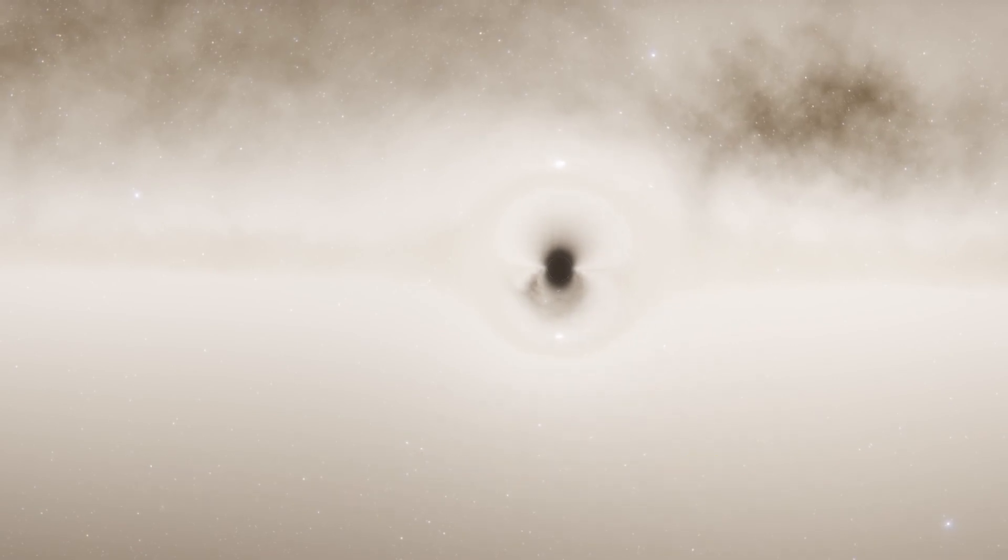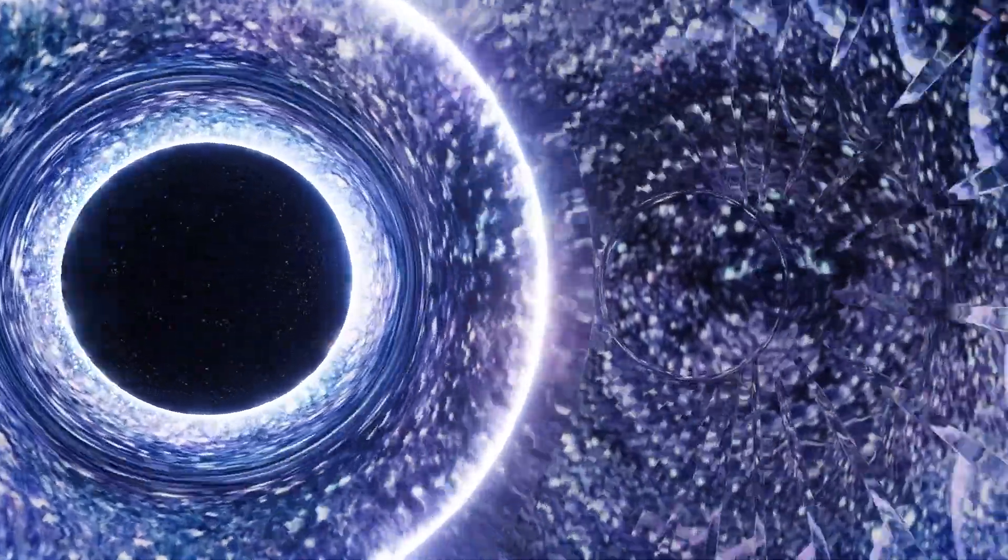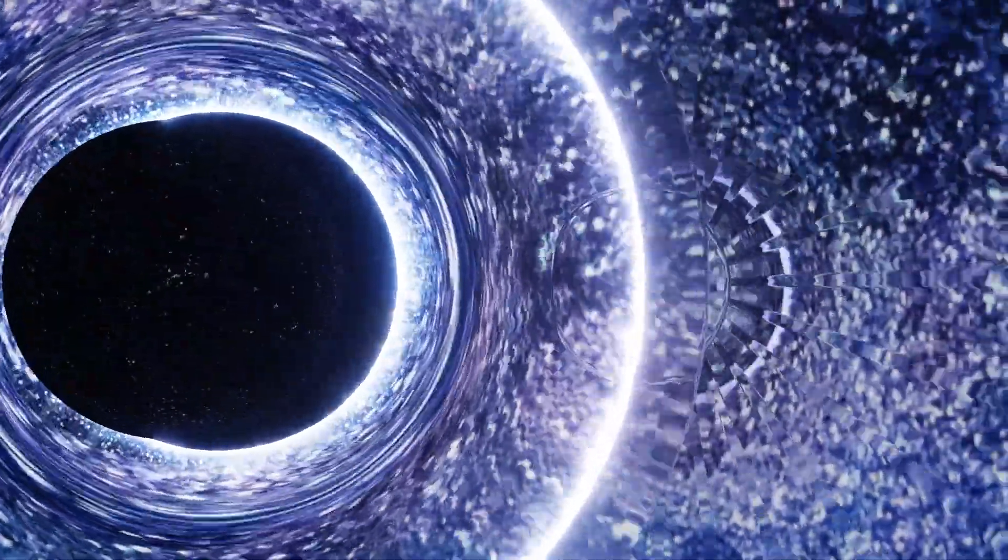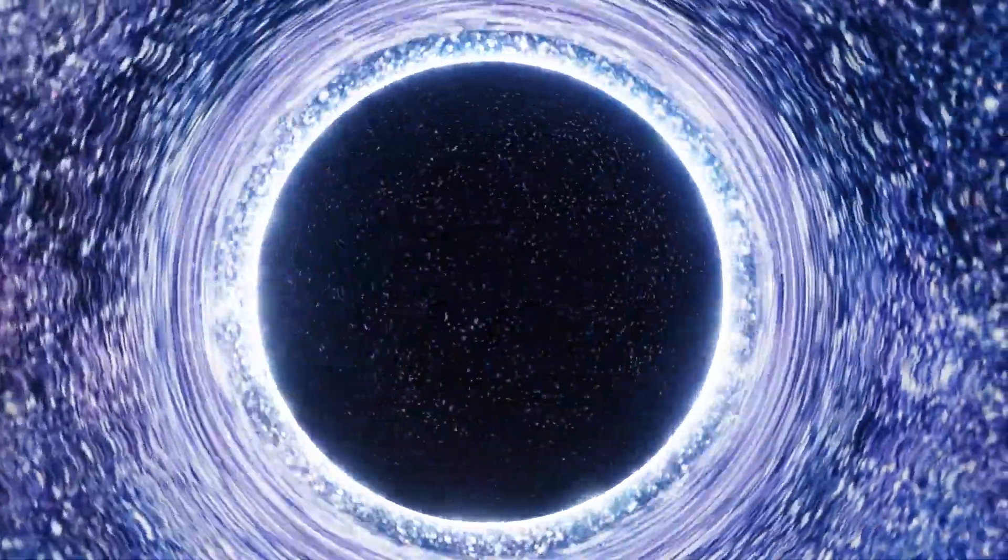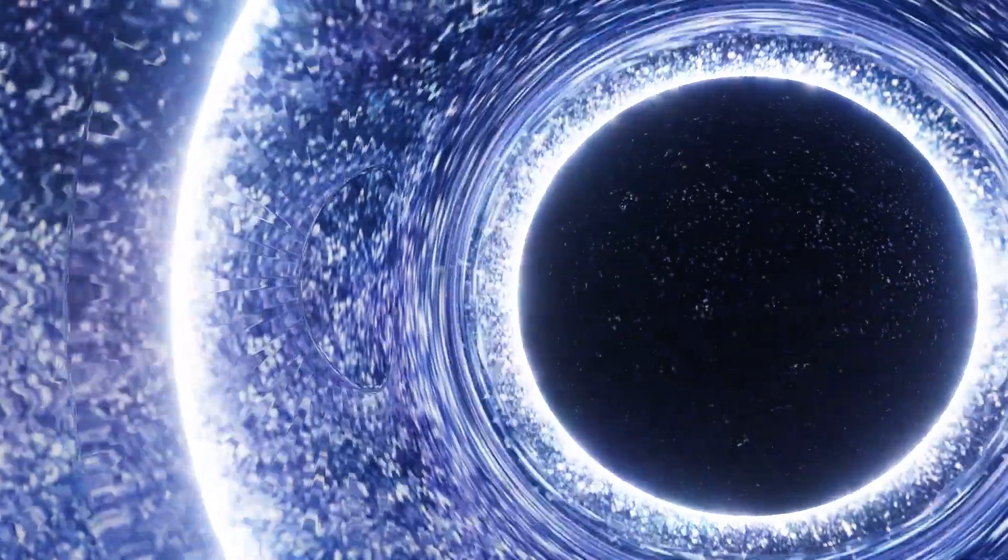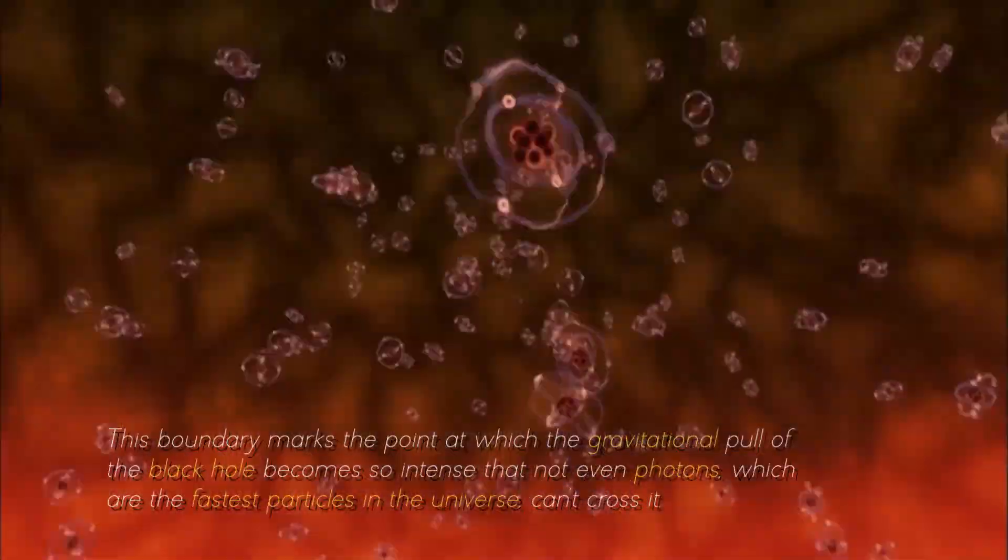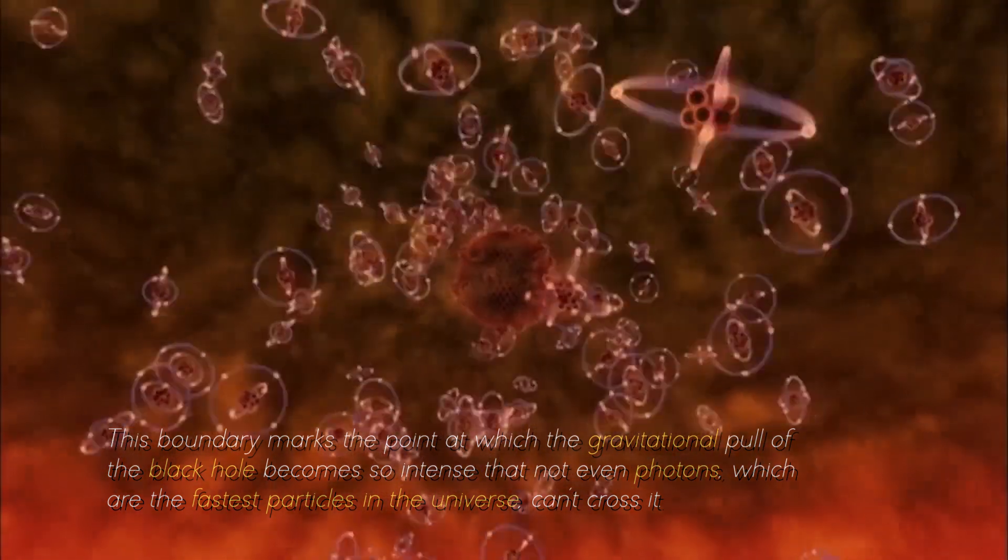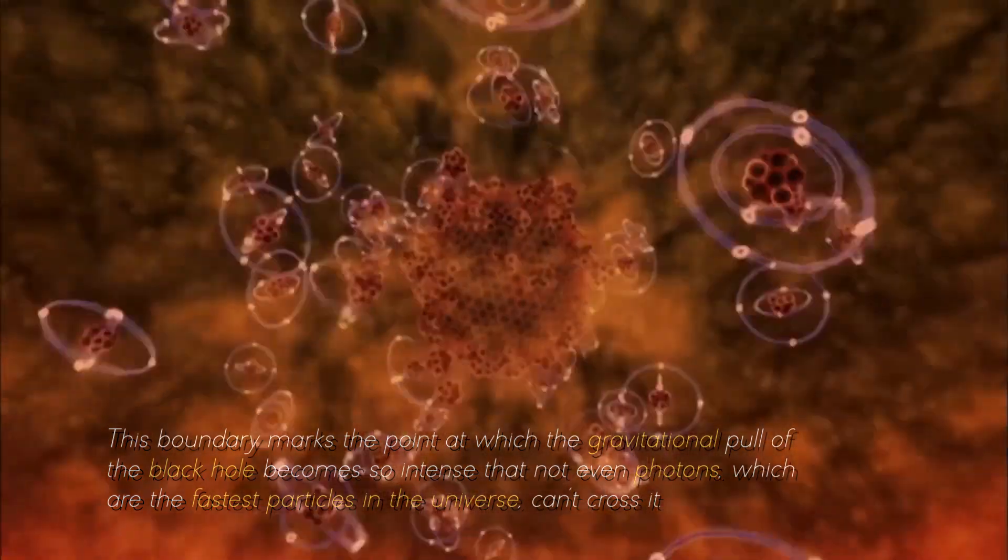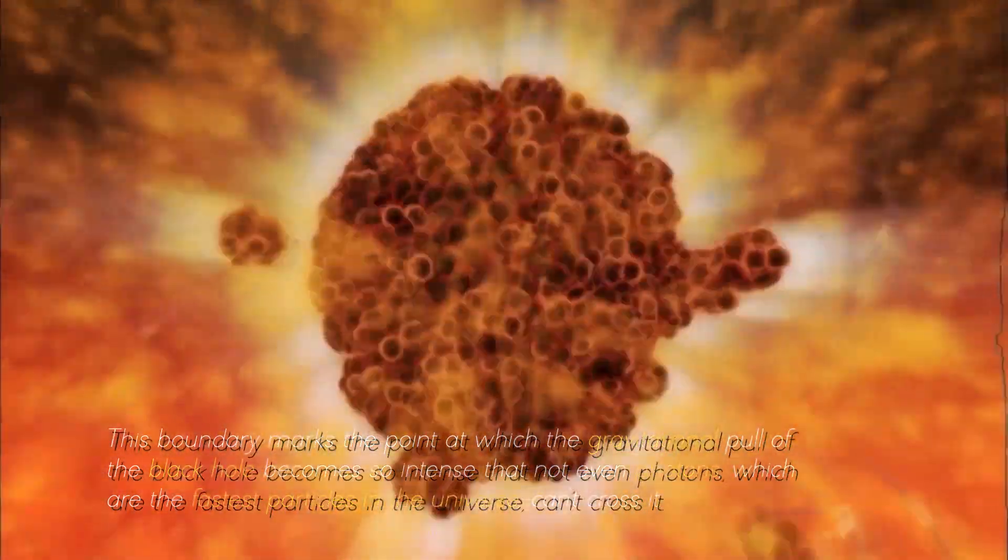This finding defies the conventional understanding of how black holes work. A fundamental characteristic of a black hole is its event horizon, an invisible boundary beyond which escape becomes impossible, even for light. This boundary marks the point at which the gravitational pull of the black hole becomes so intense that not even photons, which are the fastest particles in the universe, can cross it.